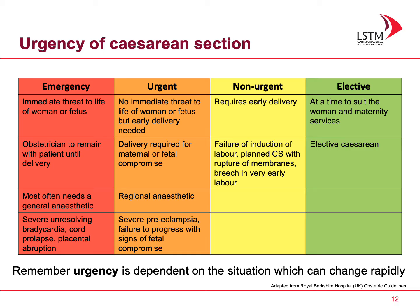How urgent is the caesarean section? It is important to remember that urgency is dependent on the situation, and this can change quite rapidly. If it is an emergency, that means the caesarean section needs to be immediate — this occurs where there is an immediate threat to the life of the woman or the fetus. The obstetrician should remain with the patient until delivery. It most often needs a general anaesthetic, as this is the quickest form of anaesthesia. Examples where this is needed include severe unresolving bradycardia, a cord prolapse, or a placental abruption.